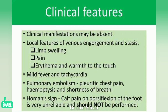The clinical features of DVT include local features of venous engorgement and stasis: limb swelling, pain, erythema, and warmth to the touch. Systemic features include mild fever and tachycardia. Pulmonary embolism may present with pleuritic chest pain, hemoptysis, and shortness of breath. Homan's sign involves calf pain on dorsiflexion of the foot, but it is unreliable and should not be performed if the patient is suspected of having DVT.